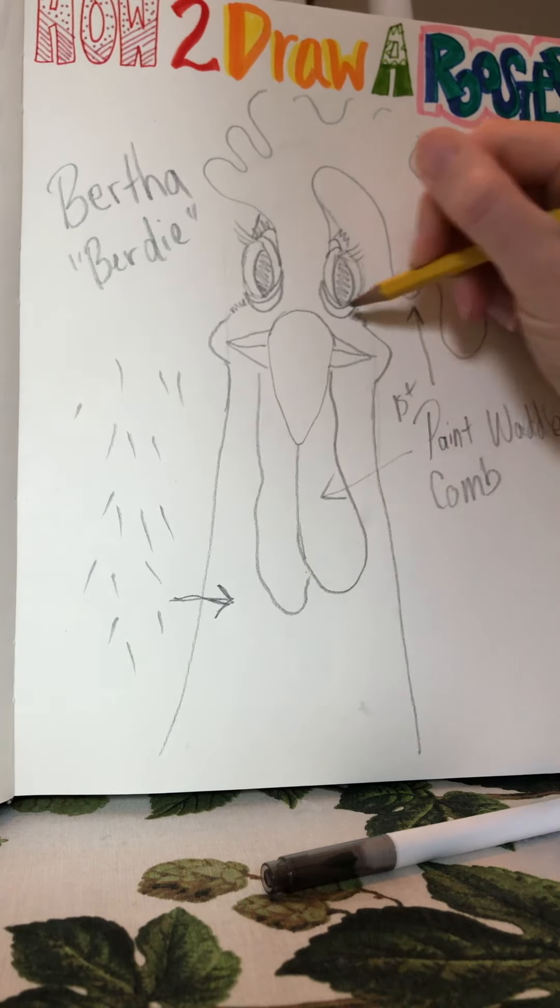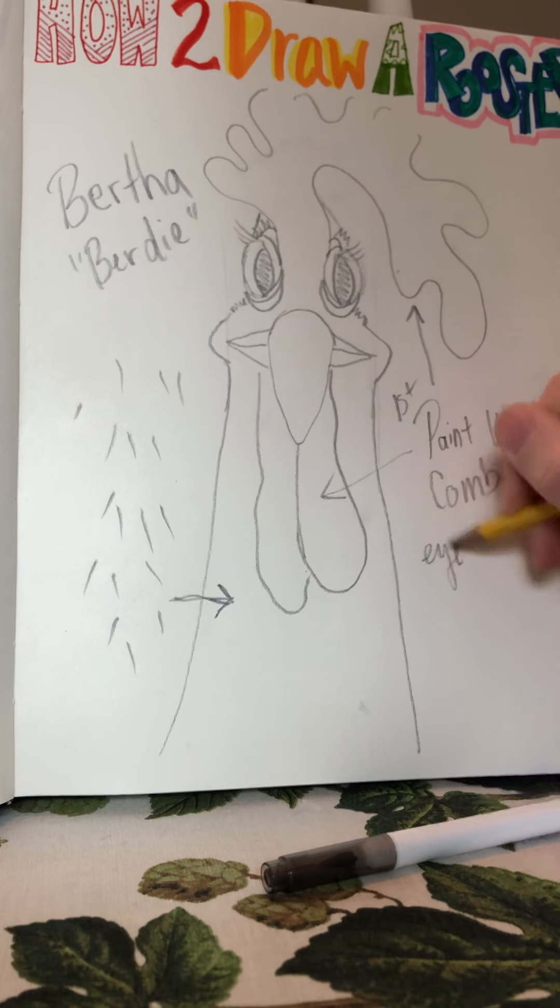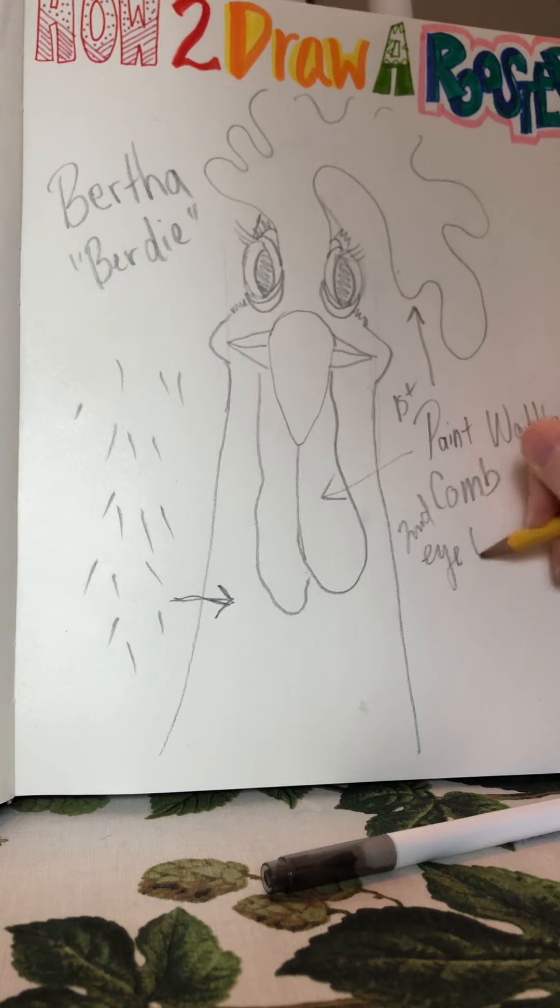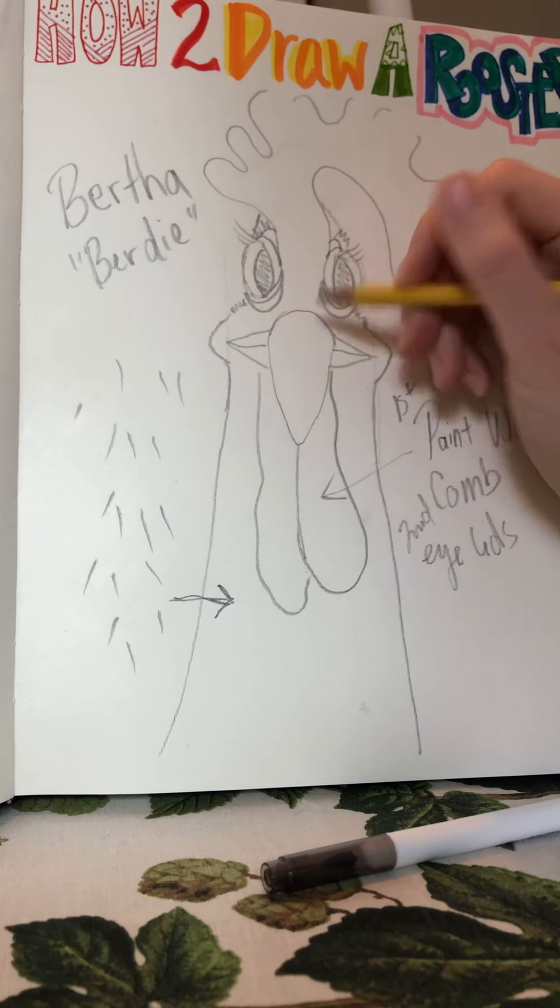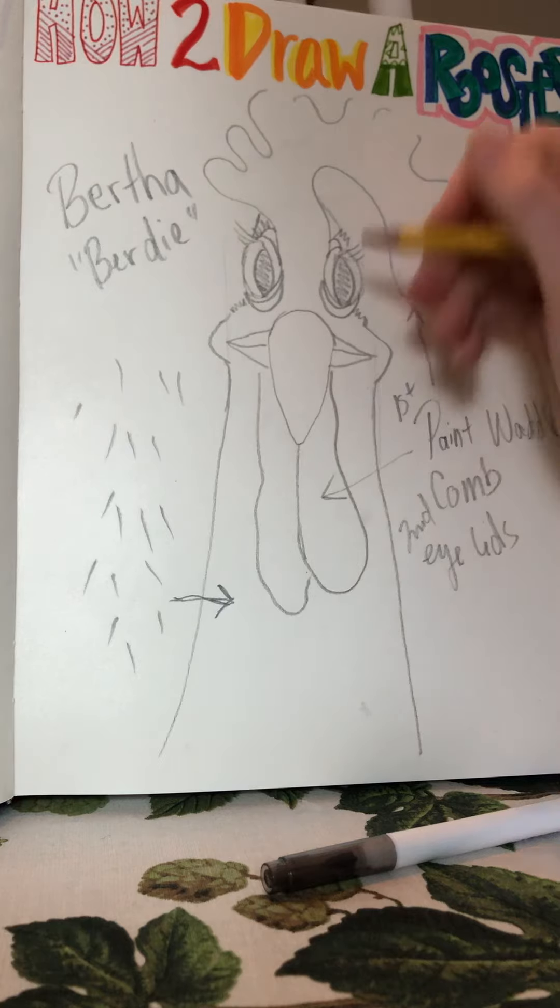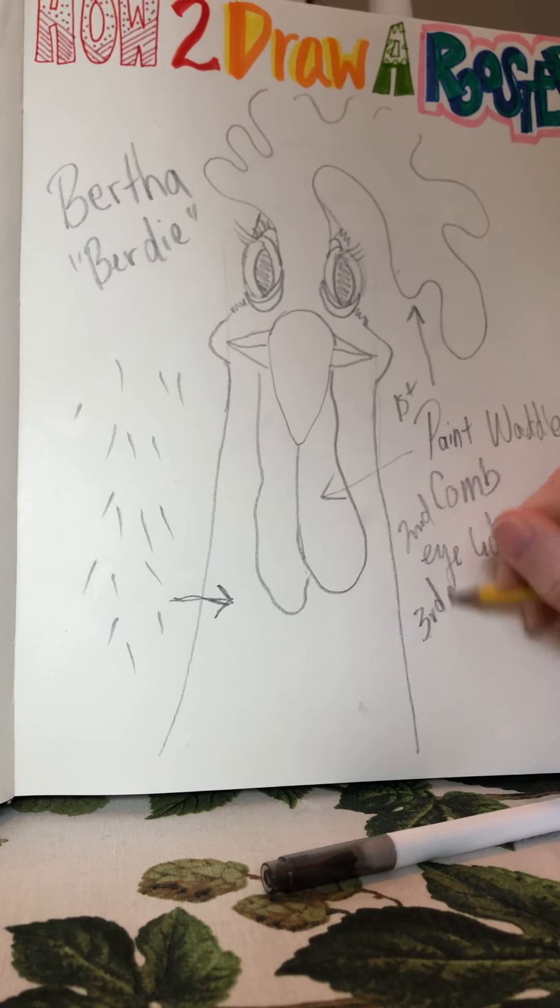Then after that, I do the wrinkles or the eyelids. So second would be eyelids. And then after that, I do the beak. You can do the beak if you want. The last video I showed you I did the feathers, but it's up to you. I like kind of doing everything in the center first. So then the third would be the beak. And then the fourth would be the feathers.